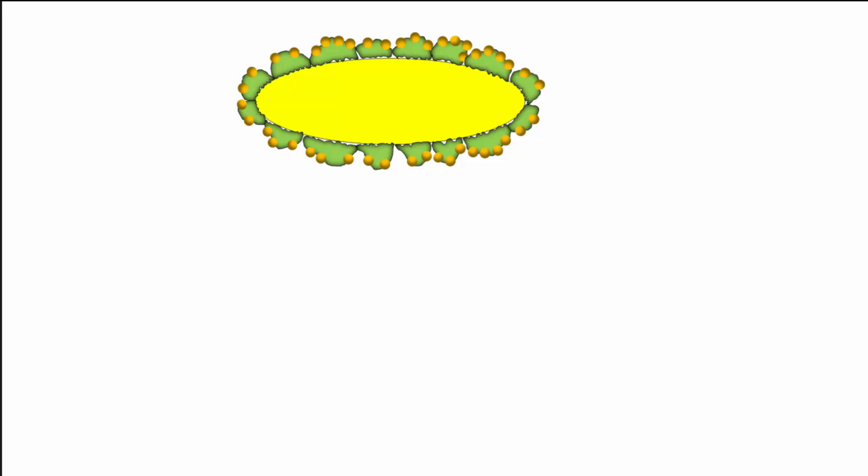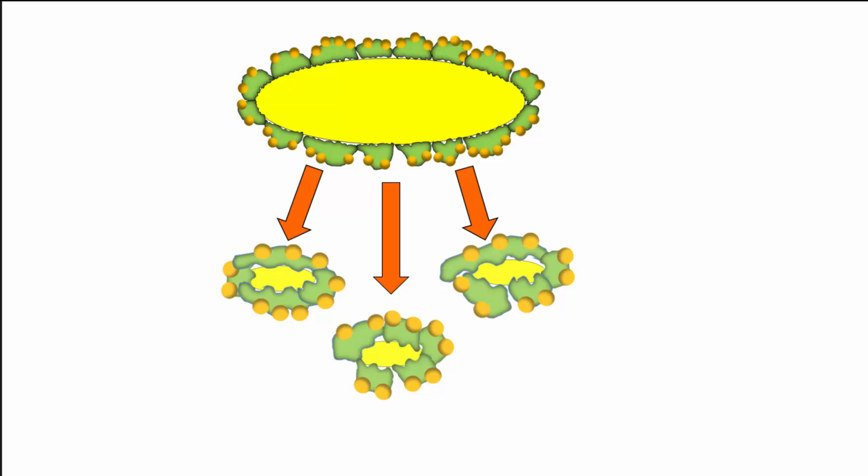Now that the fat is coated with bile salts, the emulsification process can take place. Through this process, the fat will break apart into smaller droplets. This provides a larger surface area for lipases to break down the triglycerides of the fat droplets.